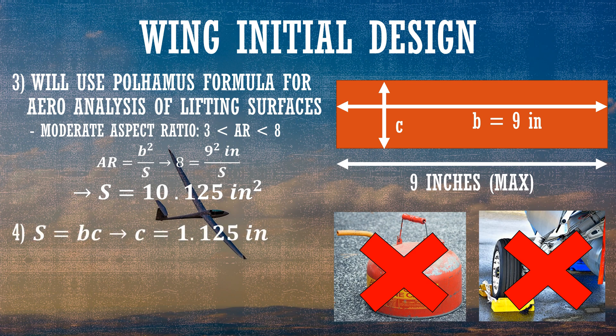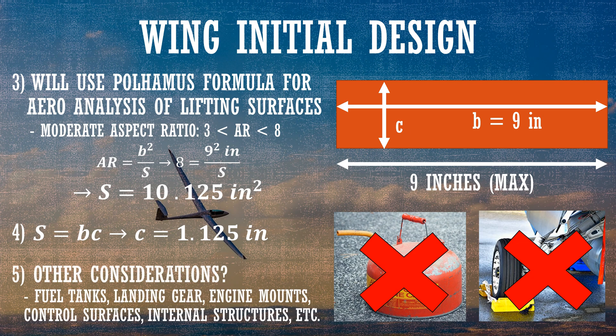With the planform area determined, we can find the chord. Since this is a simple rectangle, the planform area equals span times chord. Solving for the chord gives us a chord length of 1.125 inches. Because it's a hand-thrown glider, we don't need to worry about fuel tanks, landing gear, engine mounts, or control surfaces, so we're essentially done with the initial shape and sizing of the wing. We'll come back and do aerodynamic analysis and mass properties on this wing in a future video.